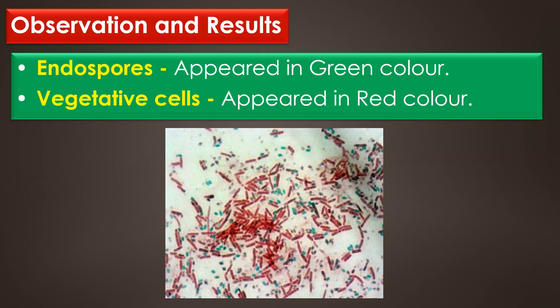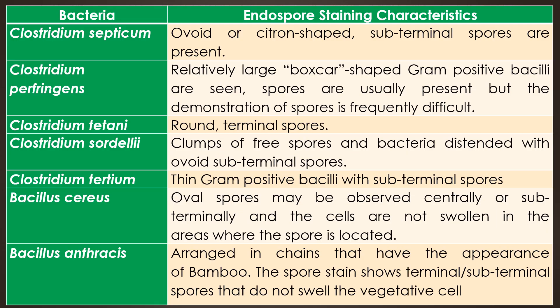Observation and results: at the end of the endospore staining technique, the endospores appear in green color and the vegetative cells appear in red color. This table shows the endospore staining characters of some selected bacterial isolates. The first one is Clostridium septicum — it is a thin gram-positive bacilli with numerous ovoid or citron-shaped subterminal spores.